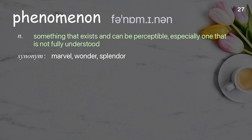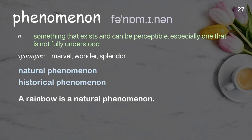Phenomenon: something that exists and can be perceived, especially one that is not fully understood. Examples: natural phenomenon, historical phenomenon. A rainbow is a natural phenomenon.